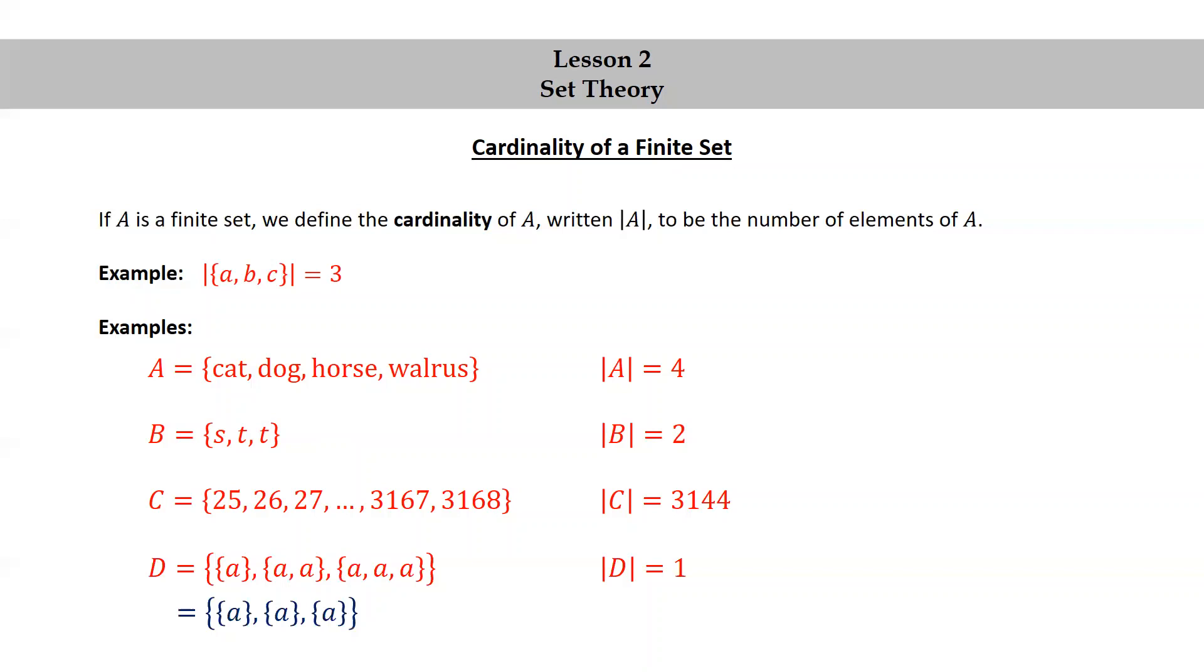Well, the set containing {a, a} is the same as the set containing {a}, and the set containing {a, a, a} is the same as the set containing {a}. So we see that we've just listed the same set three times. This is actually equal to the set containing just {a}, and there's just one element in that set.